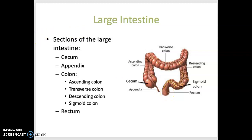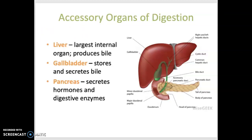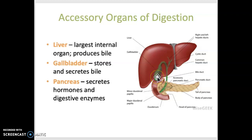There are also some accessory organs that contribute to digestion. The liver is the largest of these — it's actually the largest internal organ. It's located in the upper right quadrant of the body. It produces bile, which helps to break down and digest fat. The gallbladder is a sac-like structure located under the right lobe of the liver. It stores bile after it's been produced by the liver and then secretes that bile when it is needed for digestion.